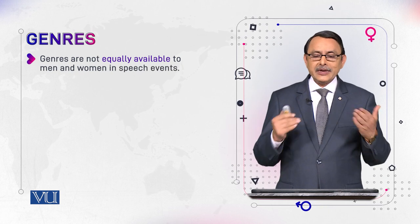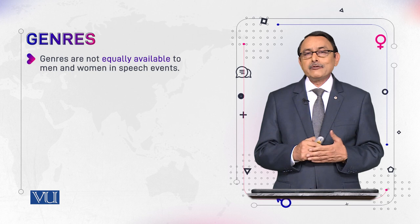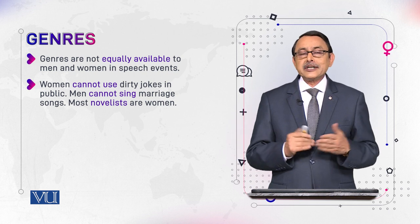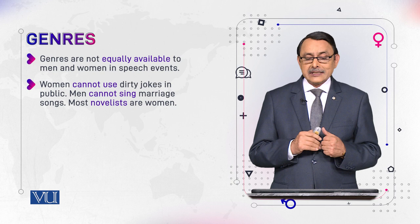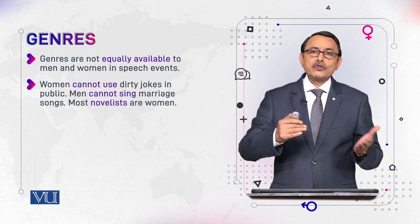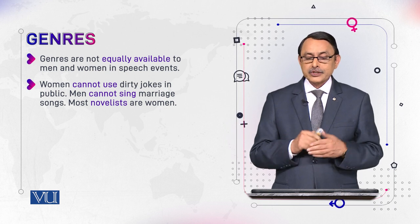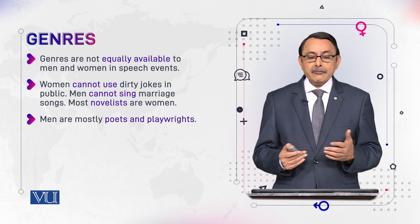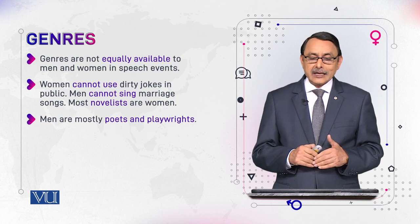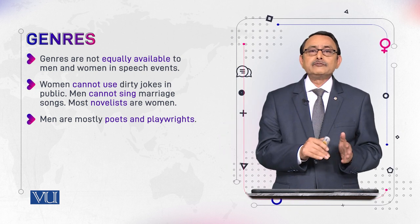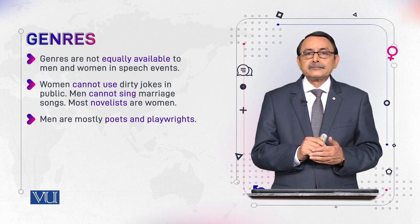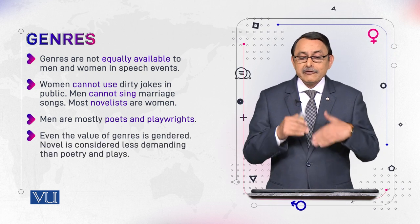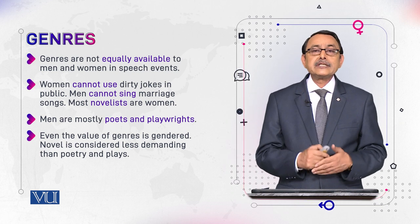Genres are not equally available to men and women in speech events — this is where you can see it from the lens of gender. For example, women cannot use dirty jokes in public, and men cannot sing marriage songs — those are not available to them. Most novelists are women, while men go for poetry and dramas. So some genres are dominated by men and some by women, because they are available on the basis of gender.